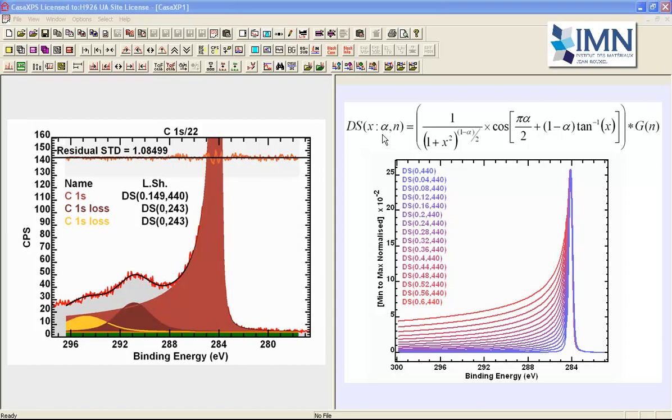When we vary alpha away from zero, we end up with a sequence of curves that are characterized by the line shape moving away from the energy axis. This might be very useful when you want to model data such as the asymmetry that we see in this carbon-1s from graphite. However, in terms of peak area, this is not so good.